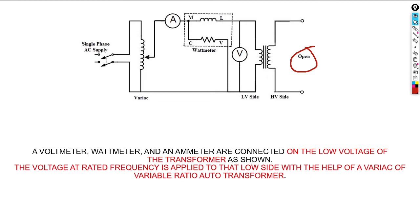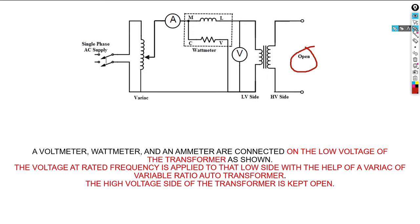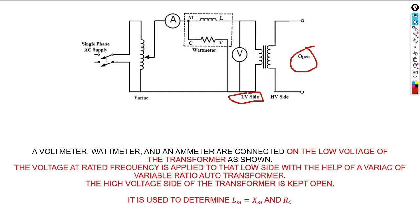For example, if you want 20 volts, you get a 20-volt output. The high-voltage side of the transformer is kept open. Know that every time you perform an open circuit test on a transformer, it is always done on the low side. This open circuit test helps us determine the core losses and iron losses.